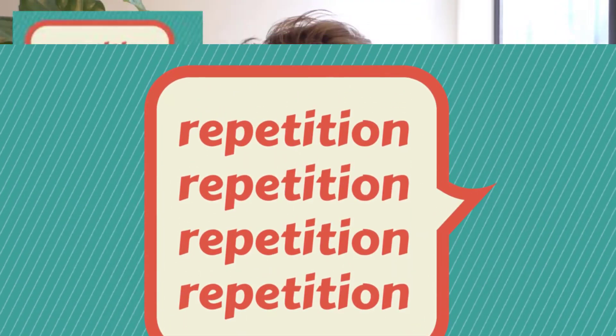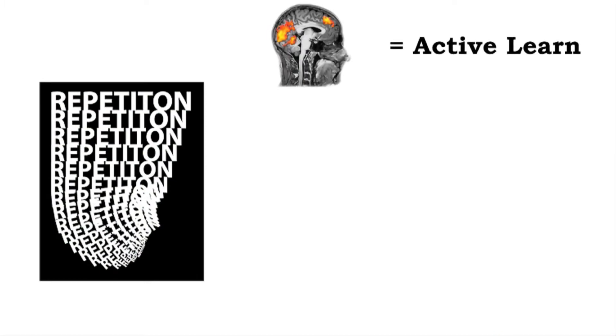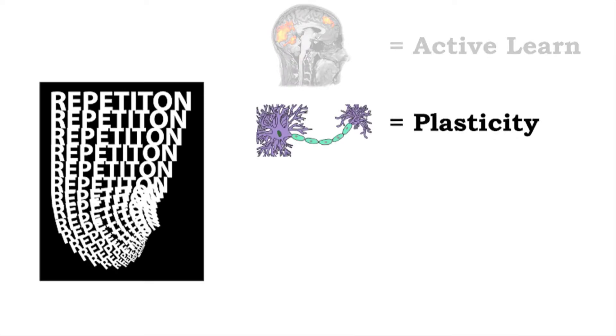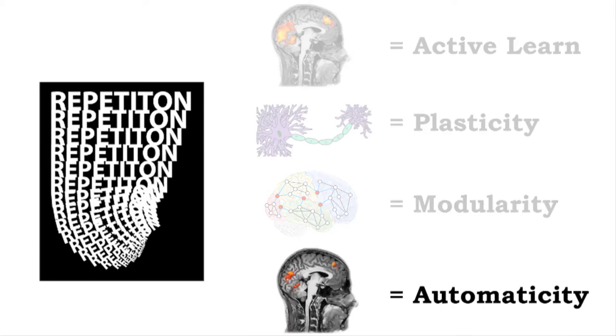In order to learn anything, the key ingredient for most situations is repetition — the more you repeat something, the easier it is for you to do that thing. As we repeat a particular skill, our brain moves through four stages. It begins in what we call the active learning stage, where the brain is working furiously to make sense of something new. The more we repeat, the brain starts to undergo plasticity, adapting to the new skill. Then the brain moves into what's called modularity — it builds a little network or module related to that skill.